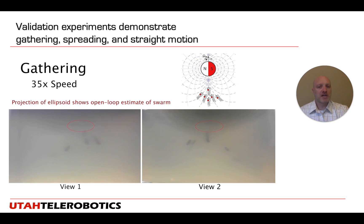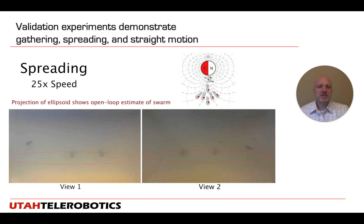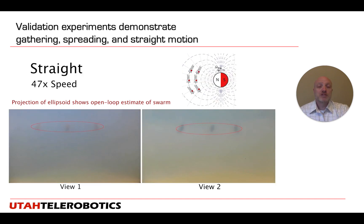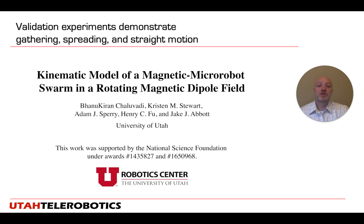The model slightly over-predicts their velocity and how much they gather. In the spreading primitive we see comparable results — the model captures the essence quite well but again slightly over-predicts velocity and spreading. This is natural since the model doesn't account for the fluid or tissue environment, which always retards the micro-robots' motion. In the straight-line portion where they're not turning, the model does a much better job, very accurately predicting swarm behavior. Our next step is to bring together our manipulation primitives and sorting primitives to demonstrate more complicated micro-robot swarm manipulation. Thank you.